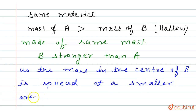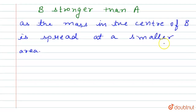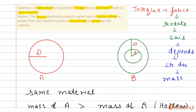According to this explanation, the first statement is correct. We can say that a hollow shaft is found to be stronger than a solid shaft made of the same size and material, so the first statement is true.